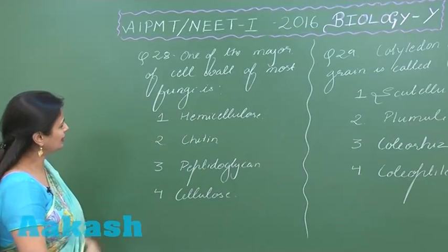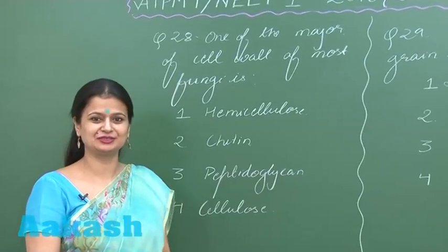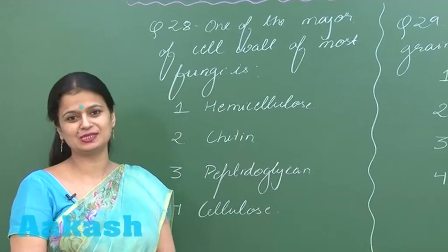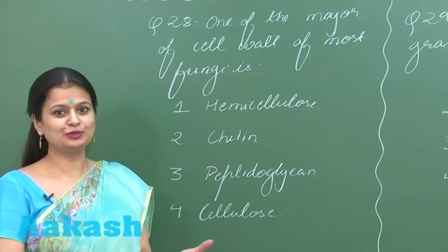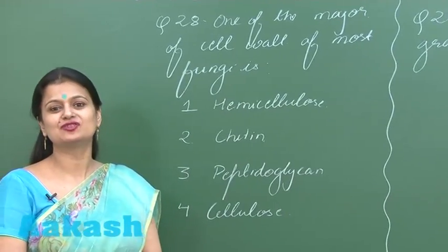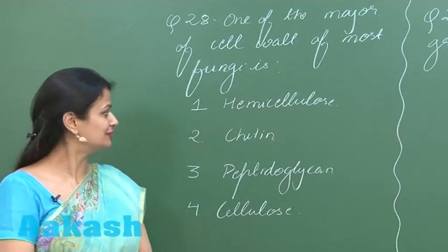Question number 28 — a very easy question with respect to the cell wall of fungi. The cell wall of fungi is made up of chitin.